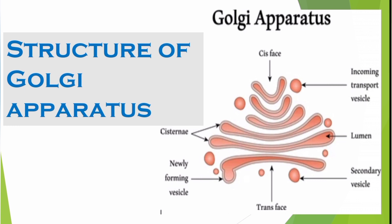Protein plus sugar is glycoprotein. Protein plus fat is glycolipid. These are the proteins and lipids transported from the endoplasmic reticulum to the Golgi apparatus. This is the modification of the vesicles — incoming transport vesicles carry proteins and lipids which are then modified in the Golgi apparatus.